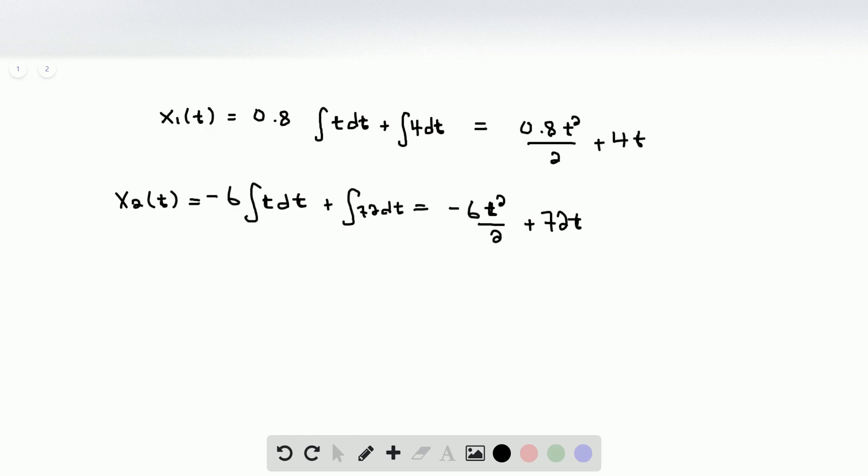Now, ultimately, we want to know the distance that this thing travels. And so the distance along path 1 that it travels is going to be equal to x1, which is our path for the first one, evaluated at the far end point of the first path, which is at time is equal to 10.